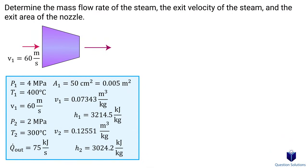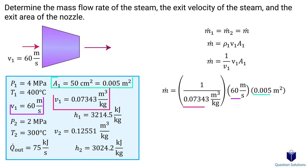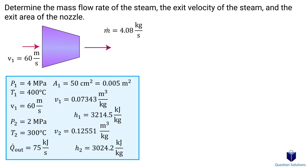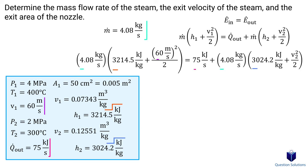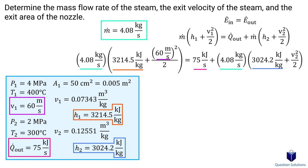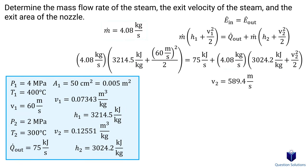To find the mass flow rate, we use the mass balance equation with one inlet and one outlet. Replacing density with specific volume and plugging in values gives us the mass flow rate. For the exit velocity, we write the energy balance equation. In this problem, we must include heat loss since we're told steam loses 75 kJ/s, but work and potential energy are negligible. Plugging in all values — and multiplying kilojoule terms by 1000 — gives us an exit velocity of 589.4 meters per second.